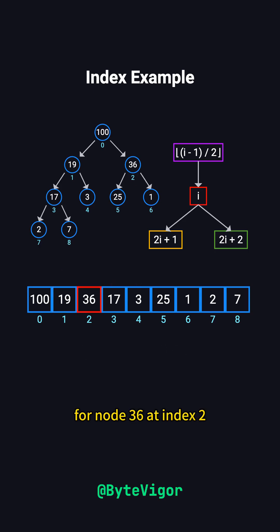For node 36 at index 2, its left child is at 2 times 2 plus 1, equaling 5, and holds the value 25. Its right child is at 2 times 2 plus 2, equaling 6, and holds the value 1.